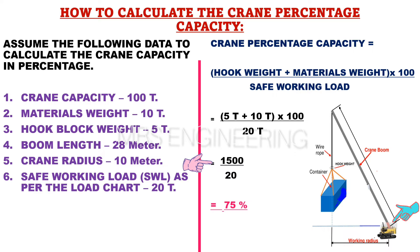The crane percentage capacity equals 1500 divided by 20, therefore the crane percentage capacity is 75%. Note that if the obtained value is below 80%, it is safe for materials lifting. If the value is above 80%, it is not safe for materials lifting and you should choose another crane for the particular job.